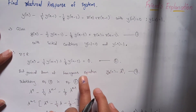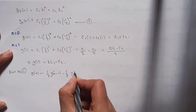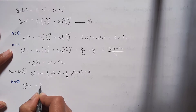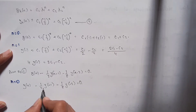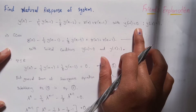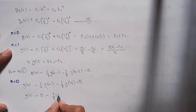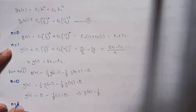Now, using equation 2 — which is y(n) − (1/4)y(n−1) − (1/8)y(n−2) = 0 — we substitute n = 0. We get y(0) − (1/4)y(−1) − (1/8)y(−2) = 0. The given initial conditions are y(−1) = 0 and y(−2) = 1. Substituting: y(0) − 0 − (1/8)(1) = 0, so y(0) = 1/8.